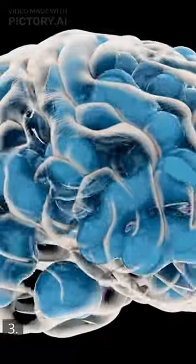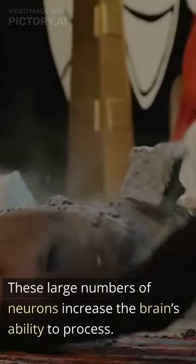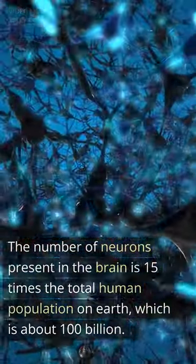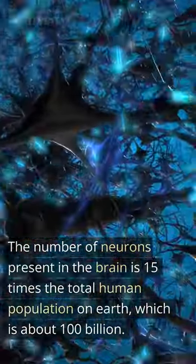3. These large numbers of neurons increase the brain's ability to process. The number of neurons present in the brain is 15 times the total human population on Earth, which is about 100 billion.